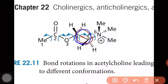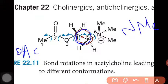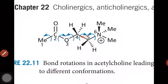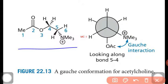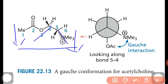According to this structure, OAc is below and NMe3 is above. Now let us see how it looks in the Newman projection. According to this conformation, NMe3 is below and OAc is below.